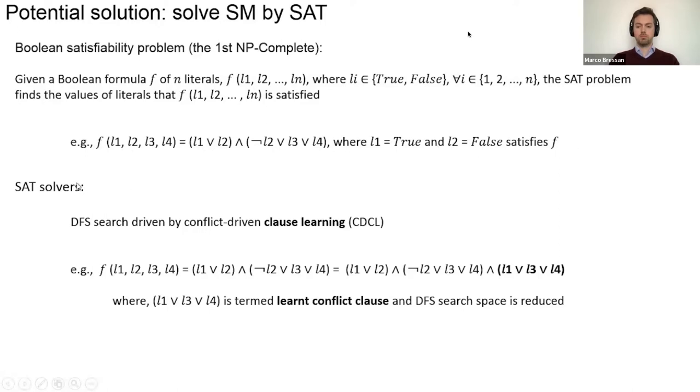Modern SAT solvers, for example, MiniSat, Crystal MiniSat, are powerful because they use the DFS search driven by conflict-driven clause learning algorithm. For the same example, we know L1, L3, and L4 cannot be false at the same time. At least one of them should be positive or true. So this equation is equivalent to adding another clause L1 or L3 or L4. This is a learnt conflict clause during the DFS search. SAT solvers can construct those kinds of clauses and add them into the system. By this way, the DFS search space is reduced.